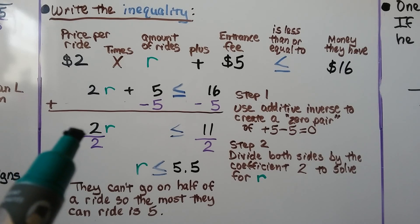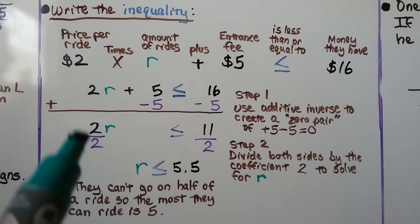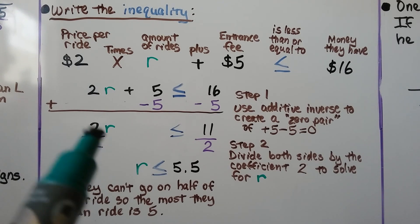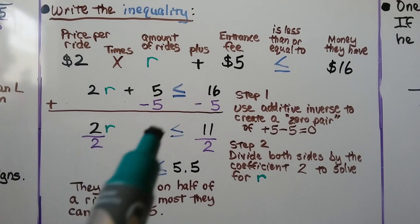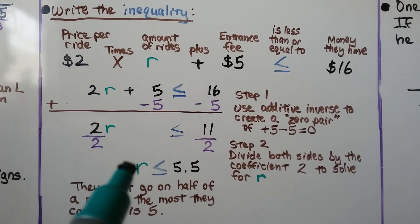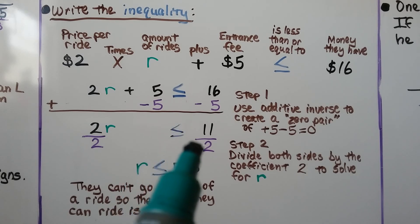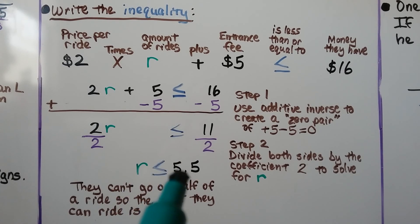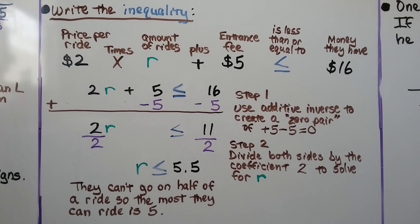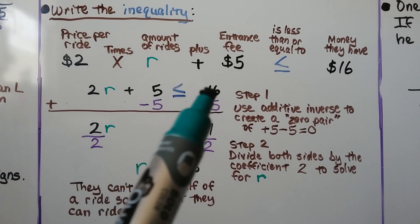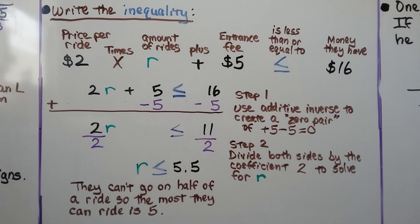Because 2R is multiplication, the inverse is division. We divide both sides by the coefficient 2 to isolate R. That gives us R is less than or equal to 11/2, which simplifies to 5.5. They can't go on half a ride, so the most they can ride is 5. They can go on 5 rides and have a little bit of money left over, but they can't go on 6 — they don't have enough. We used a less than or equal to sign because they couldn't go over $16.